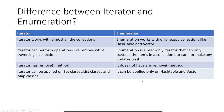What is the difference between Iterator and Enumeration? Iterator works with almost all collections because it works with the new collection hierarchy, while Enumeration works with legacy collections like Hashtable and Vector. Iterator can perform operations like remove while traversing the collection; Enumeration is a read-only iterator and cannot make any changes while reading data. Iterator has a remove method; Enumeration does not have a remove method. Iterator can be applied on Set, List, and Map classes, while Enumeration can only be applied on Hashtable and Vector.